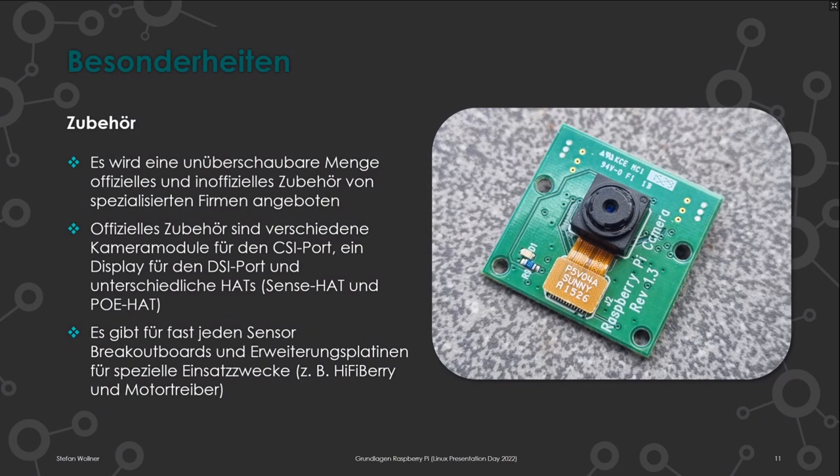Von inoffiziellen Händlern gibt es auch spezielle Boards, wie das HiFi-Berry – für Audiophile das Board schlechthin, weil der Audioausgang sehr gut ist dank hochwertiger DACs. Es gibt auch Boards für den Aufbau von Robotern, mit integrierten Motortreibern: Man steckt den Hat auf den Raspberry Pi und kann direkt Motoren anschließen, ohne sich über Stromversorgung und Ansteuerung Gedanken machen zu müssen.